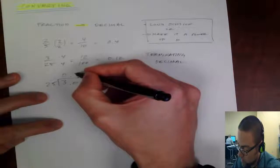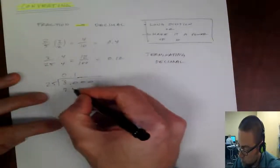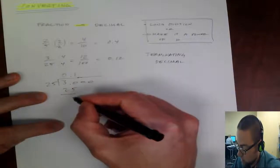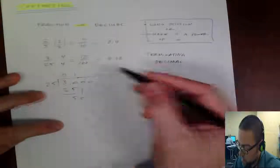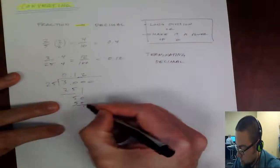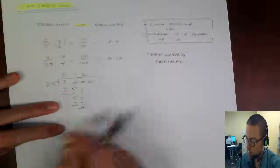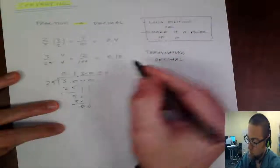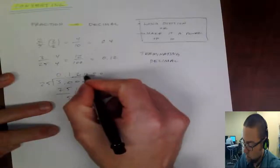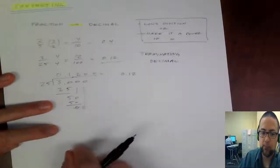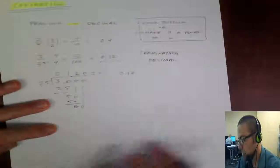25 goes into 30 one time. So 1 times 25 is 25. Subtract, I get 5, bring down the 0. 25 goes into 50 two times evenly, right? So that's going to be the terminating point. So I could bring down the 0, and then it would just continue to be zeros, but those don't change the value of it. So this is what we call a terminating decimal. I don't have to write those zeros, so it's just 0.12, which is the same as what I got by using the power of 10 method.